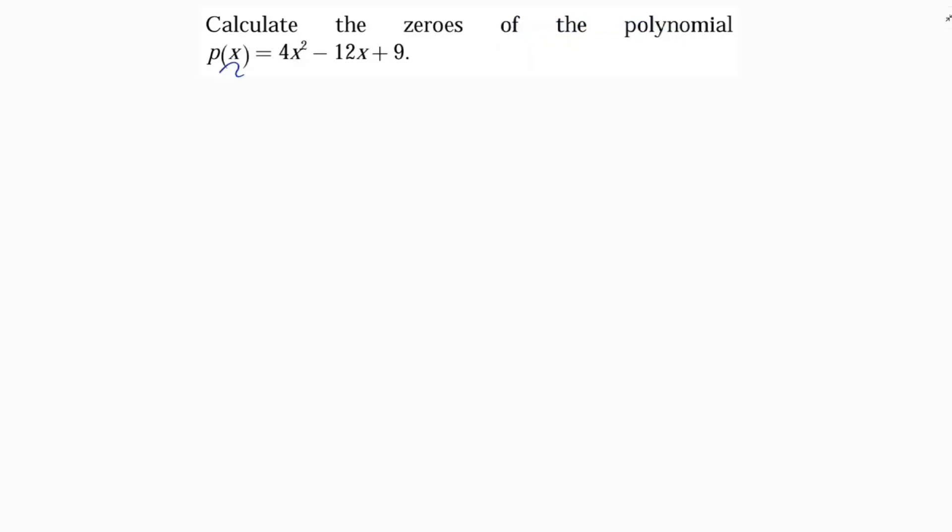Calculate the zeros of the polynomial p(x) = 4x², see here it's 4x² minus 12x plus 9. So we need to find the zeros of the polynomial, so I'll take the polynomial and equate it with 0.